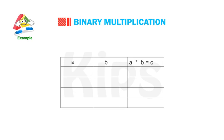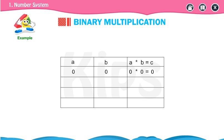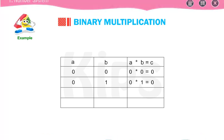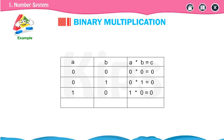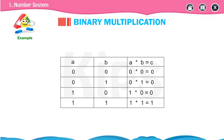The multiplication table for binary digits is: A × B = C; 0 × 0 = 0; 0 × 1 = 0; 1 × 0 = 0; and 1 × 1 = 1.